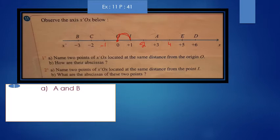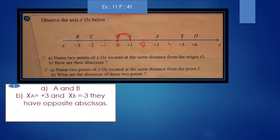Now, B is at the abscissa of minus 3, and A is at the abscissa of plus 3. Since they are opposite numbers, they have the same distance from 0. The x of A is plus 3 and x of B is minus 3. They have opposite abscissas. So, I can say that O is the midpoint of AB.